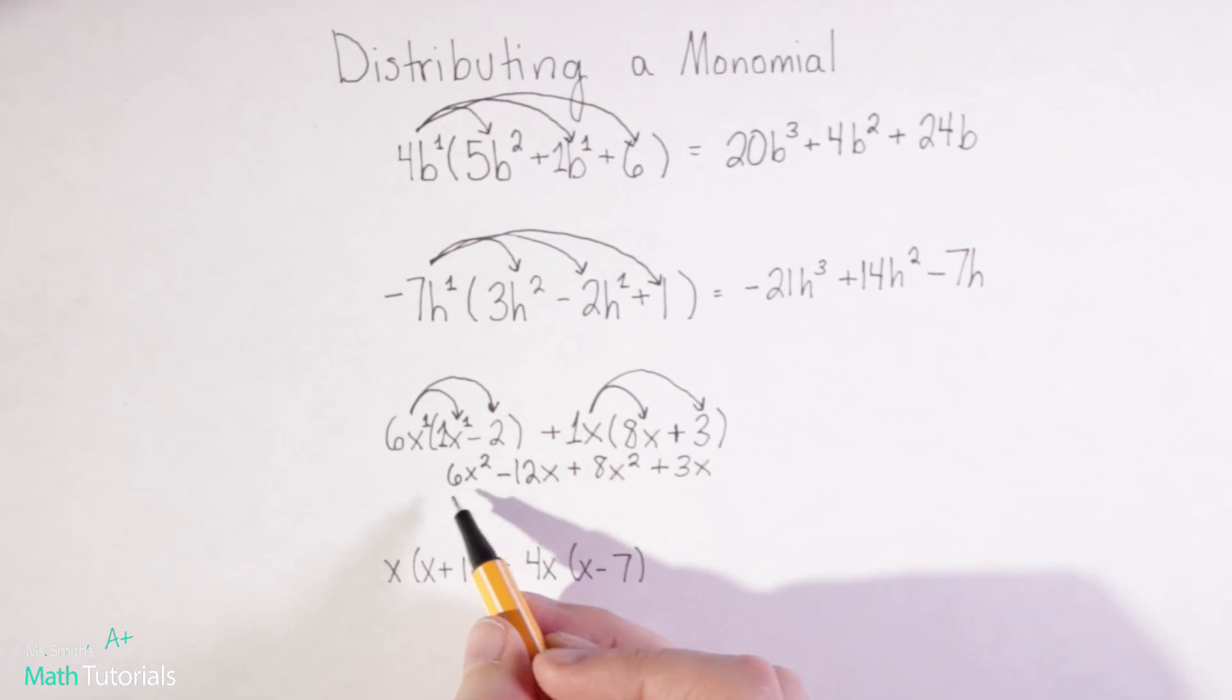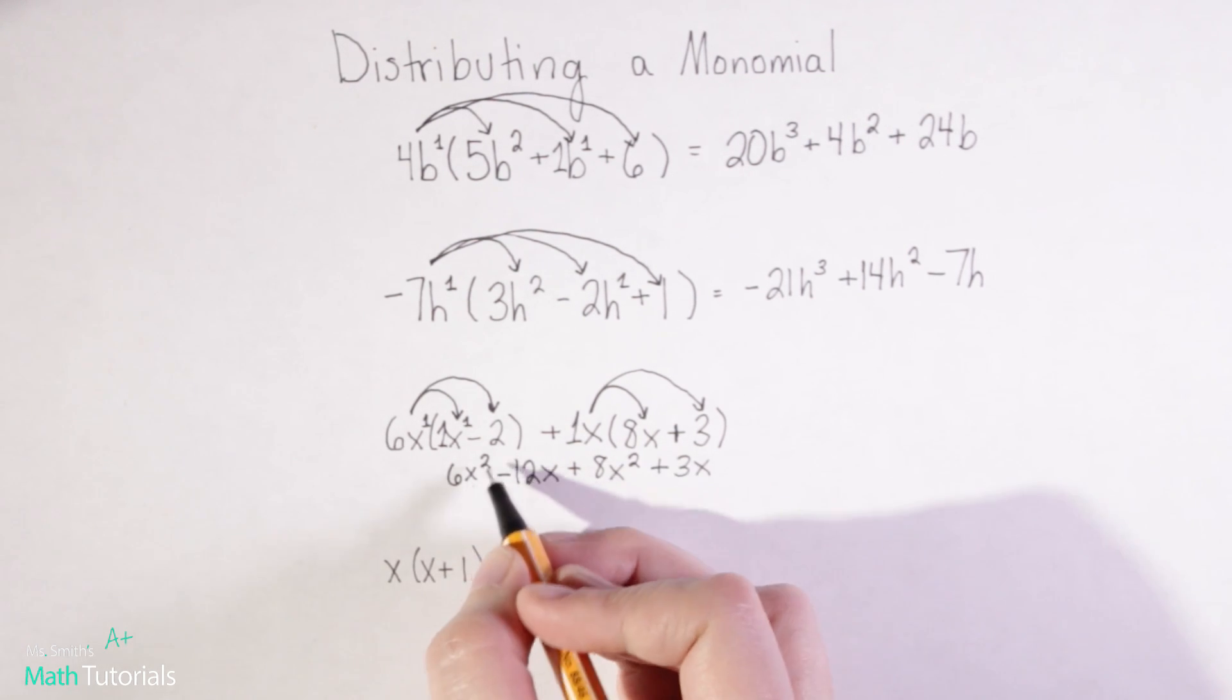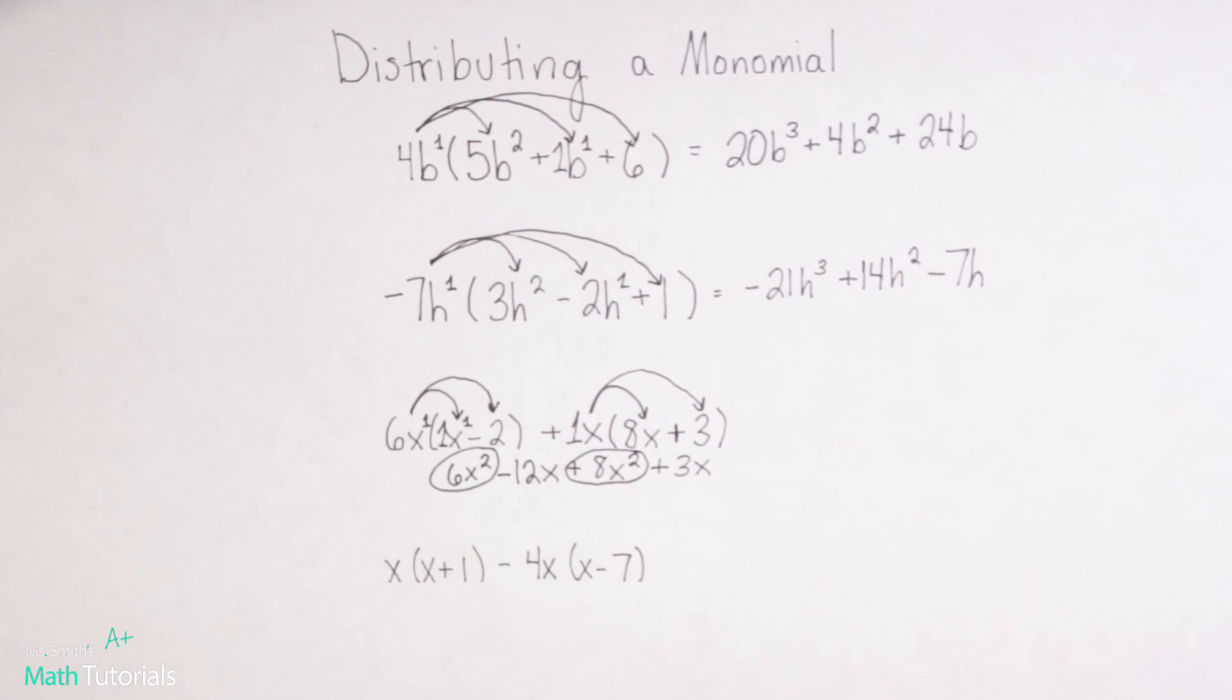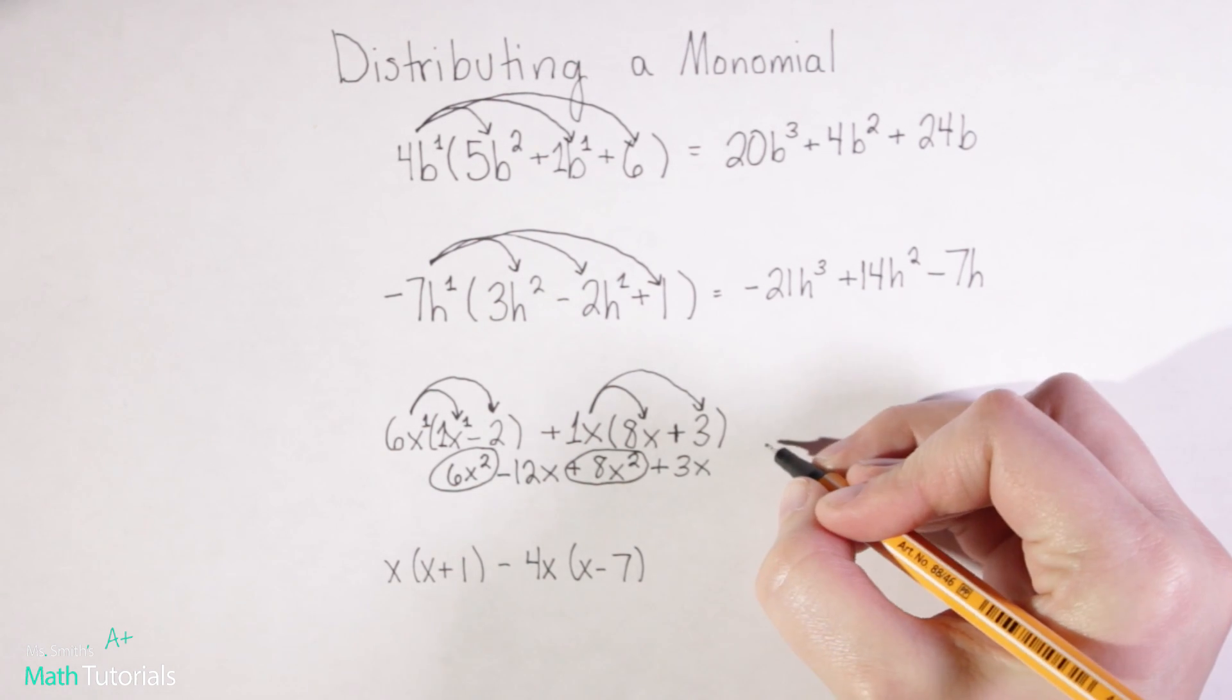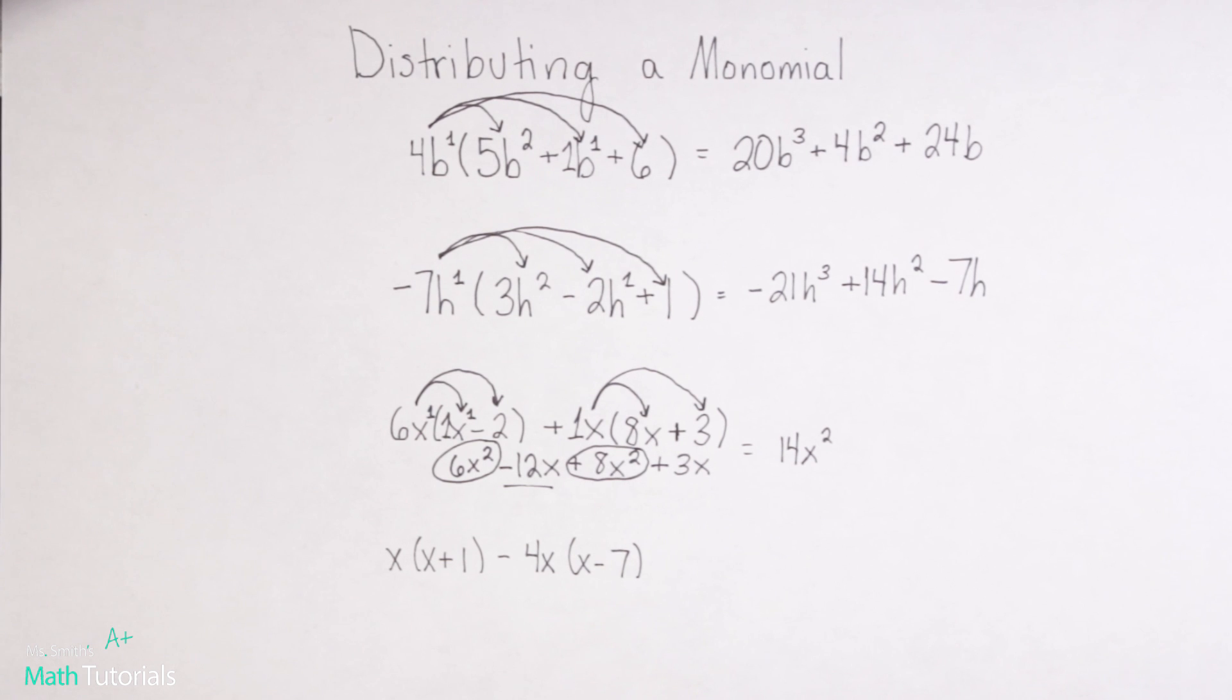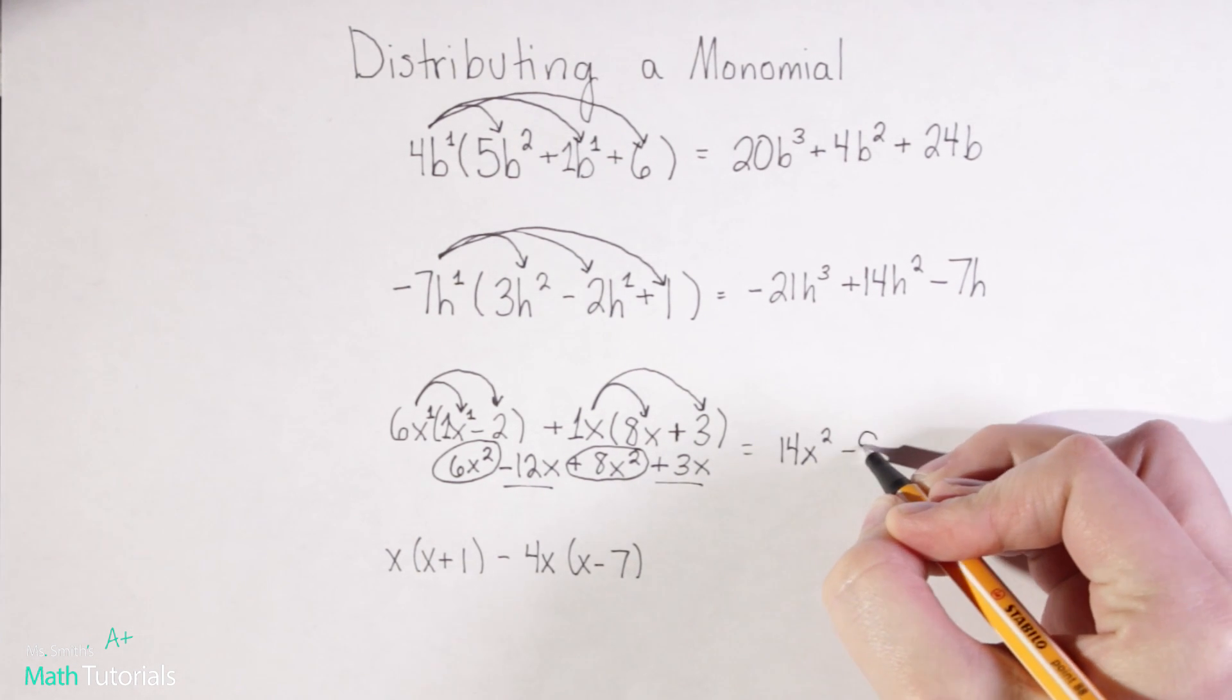So you'll notice here we definitely don't have my final answer because I've got some like terms that I need to combine. So I see I've got this 6x squared and this positive 8x squared that I could combine. Remember when we're adding or subtracting it's super picky as far as combining like terms. It has to be the same variable with the same exponent. So 6 plus 8 is going to give me 14, and then x squared would stay the exact same. Our next like terms that we can combine would be negative 12x and positive 3x. So negative 12 plus 3 is going to be negative 9x.